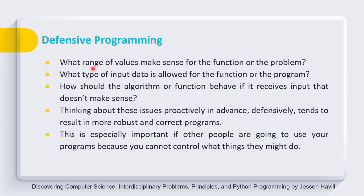For example, in preconditions we talk about what range of values make sense for the function or problem to work properly, or what type of input data is allowed. Preconditions can be based on the allowed input data type, which is a very important factor. If we don't provide input data in the proper format and range, the function may behave inappropriately and the output can make no sense. Thinking about these issues proactively in advance is called defensive programming.